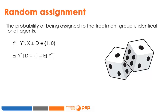When we have statistical independence, the expected treatment outcome Y_T of an agent assigned to the treatment group is equal to the expected treatment outcome of any agent in the experimental group regardless of its assignment. Because the assignment is random, the right-hand side of the equation has no conditioning. When we randomly select agents to the treatment group (D=1), the agents left behind are also a random sample of the experimental sample. The expected treatment outcome given assignment to the control group (D=0) equals the expected treatment outcome for the entire experimental sample.